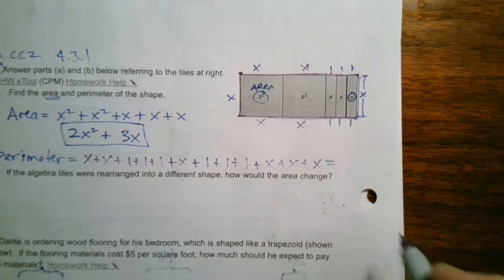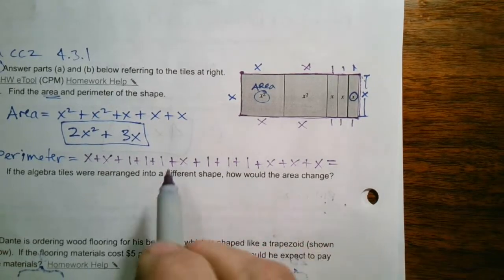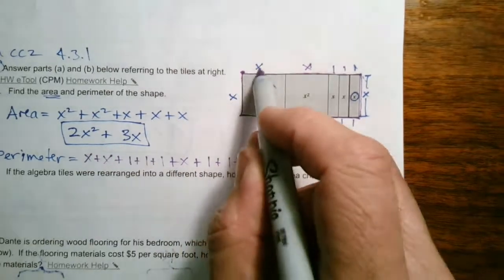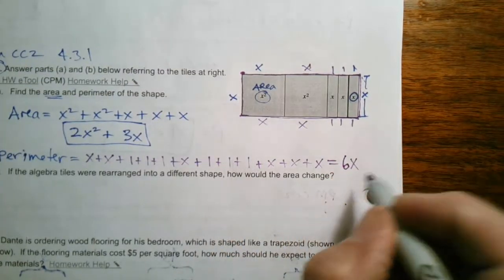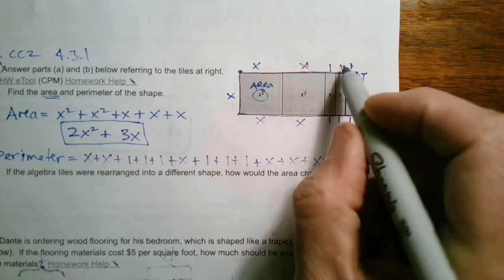But there is a shorter version. We can actually combine like terms. So how many x's am I adding? I'm adding 1, 2, 3, 4, 5, 6 x's. So we would say 6 times x or 6x plus how many units, how many 1's.